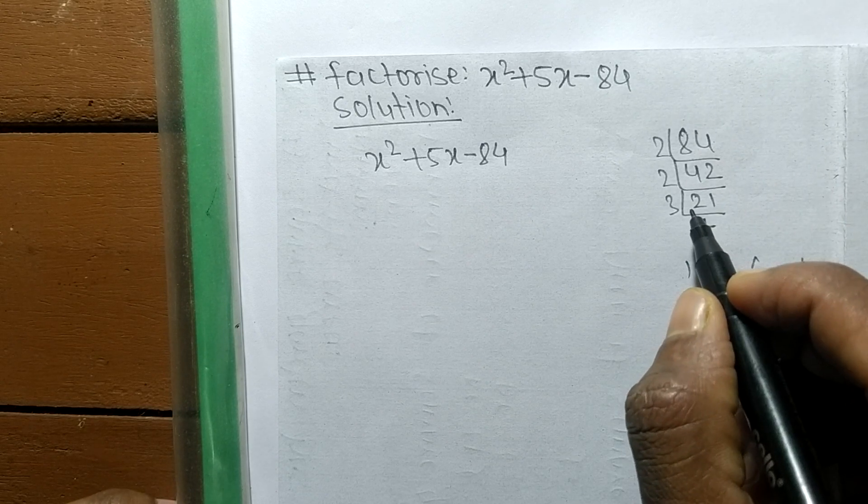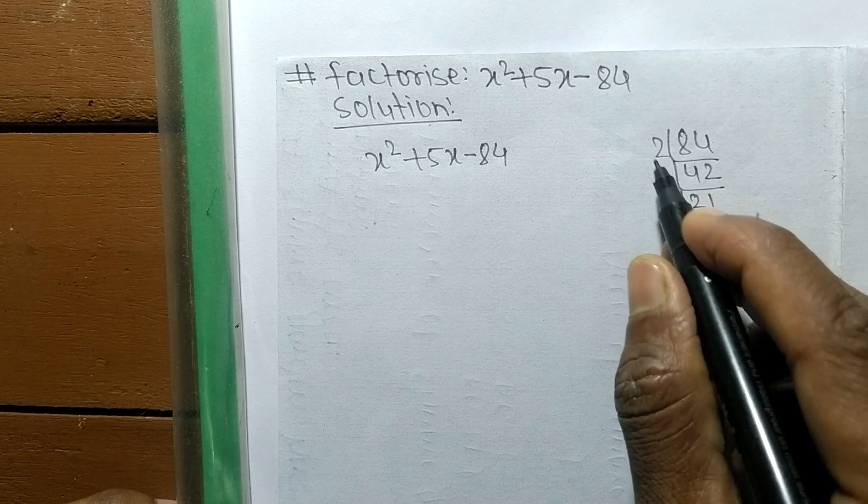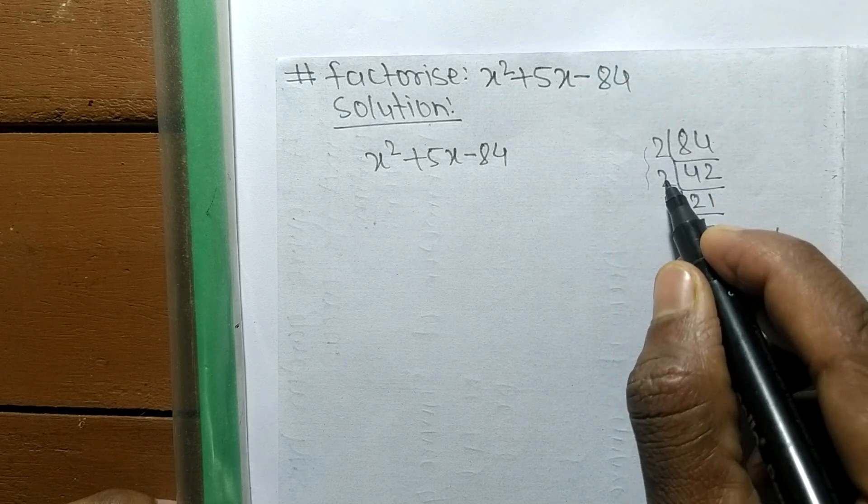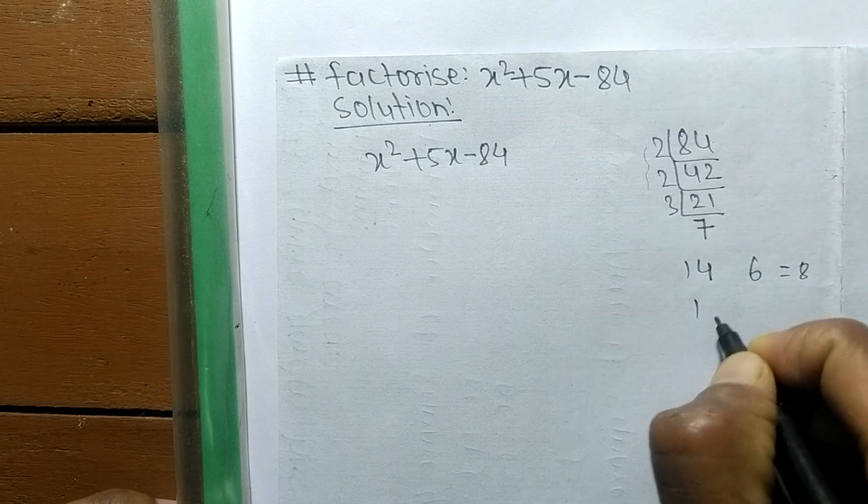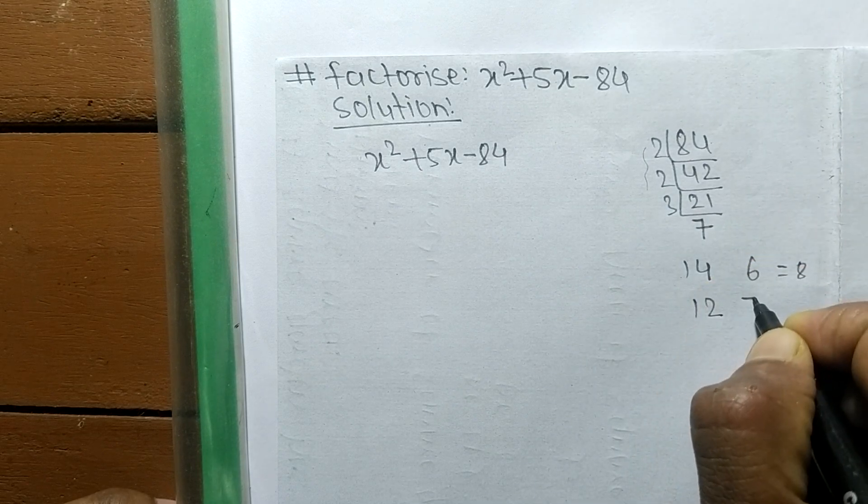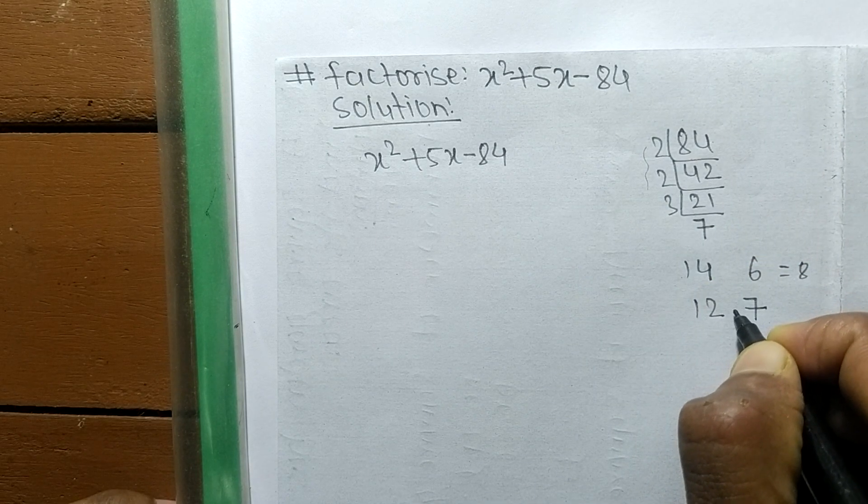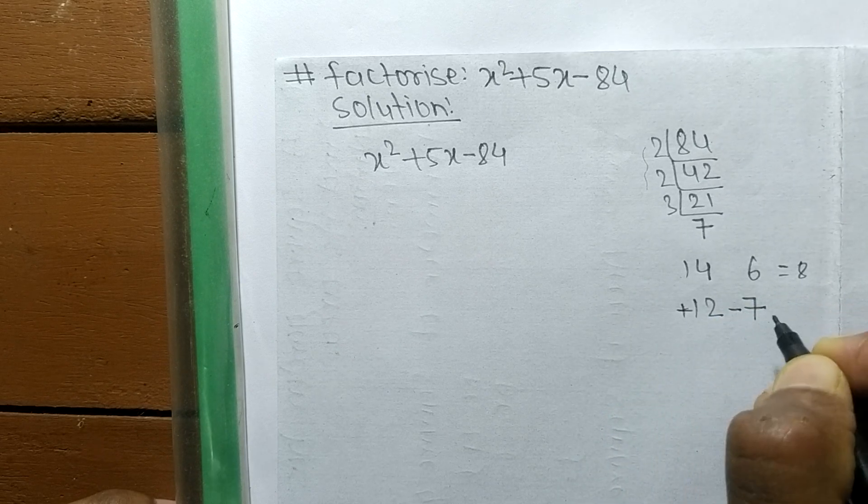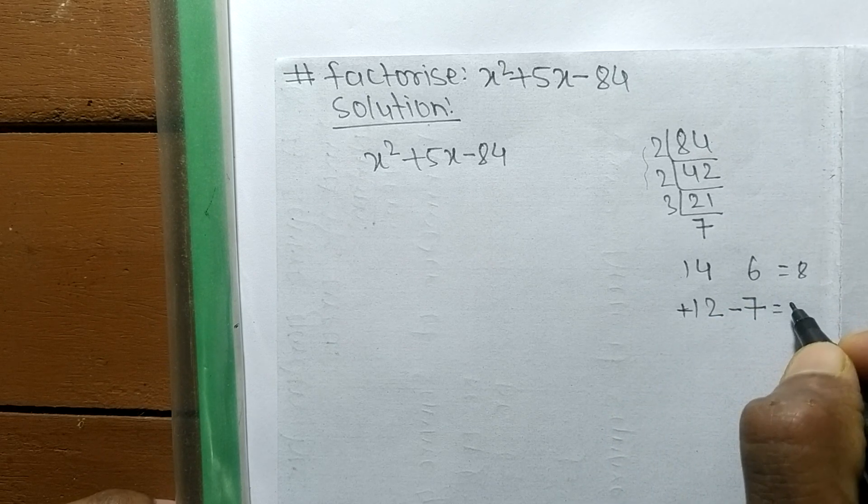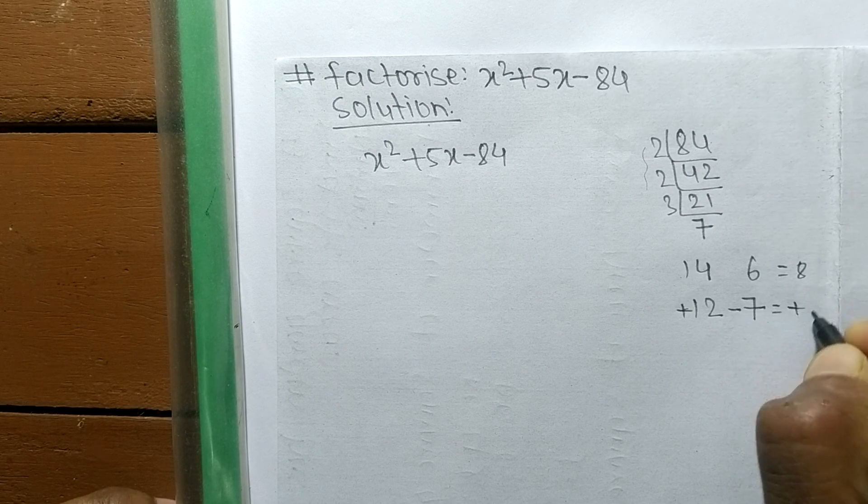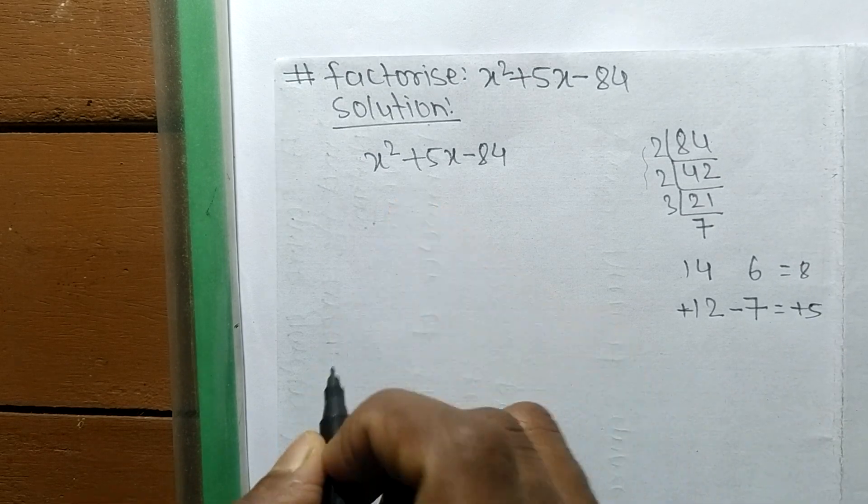When you multiply 2 times 2 times 3, it equals 12, and the remaining is 7. So 12 minus 7 equals 5, which is our middle number.